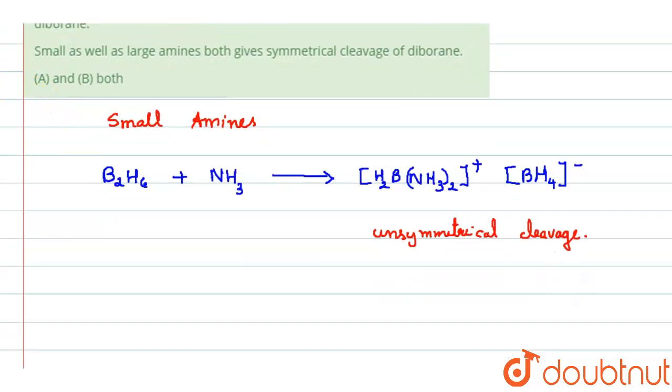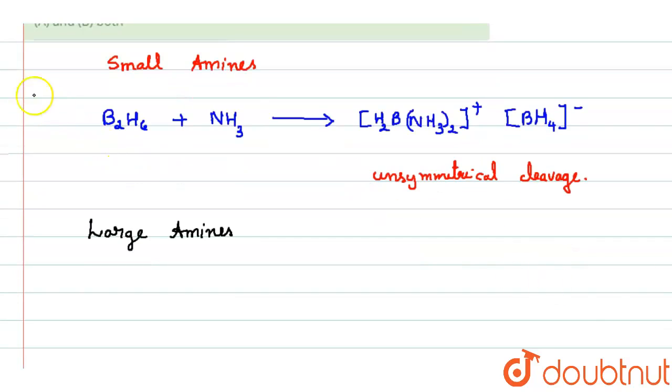Now, in the case of large amines, let us have a look into the case of large amines. Large amines means bulkier amines. The same B2H6 in the case of bulkier amines like trimethylamine.